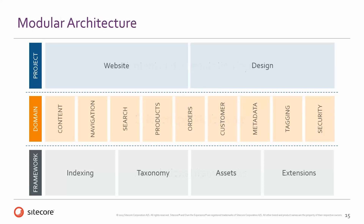All of these layers have modules, so this is where the modular architecture comes in. In the project layer there's a website module — where we tie together the Sitecore parts of page types, page layouts, layout definitions — and a design project, which ties together the visual design and CSS. In the domain layer, we have all the features: basic content such as page content, navigation, search, products, and so on. In the bottom framework layer we have things like indexing and search, taxonomy, asset management, and extensions on Sitecore.